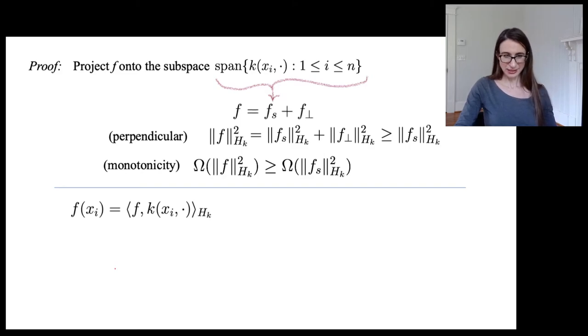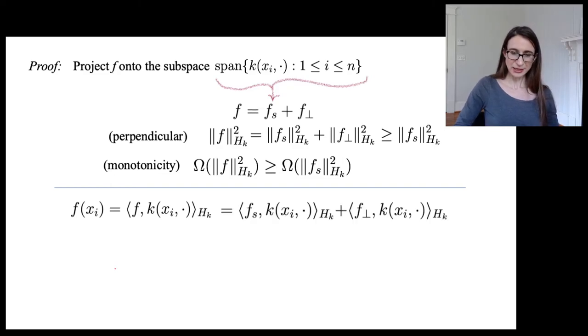Okay, so let's use the reproducing property in reverse to get this. And then I'm going to use our bilinearity to just separate, f equals f_s plus f_perp and then separate into the two terms there.